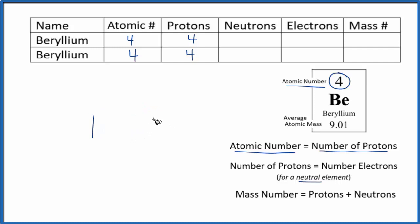So if you see Be, anything on the periodic table is neutral. The number of protons equals the number of electrons. So we have four protons, four electrons for beryllium.